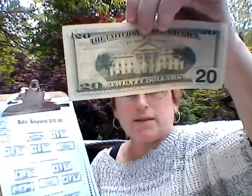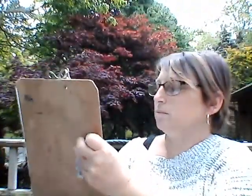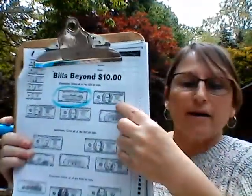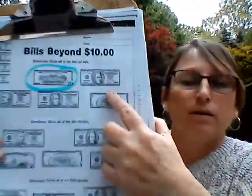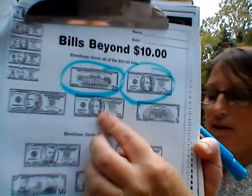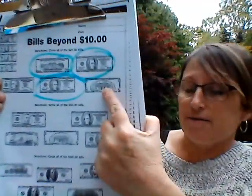Let's be focused, do good scanning, and take our time. We're just doing the top part right now — circle all the twenty dollar bills. That is the back of a twenty, and that's the front of a twenty. See the two and the zero — that's how we know it's a twenty dollar bill. That is a ten dollar bill. This is a twenty dollar bill. This is a twenty dollar bill. And this is a five dollar bill.